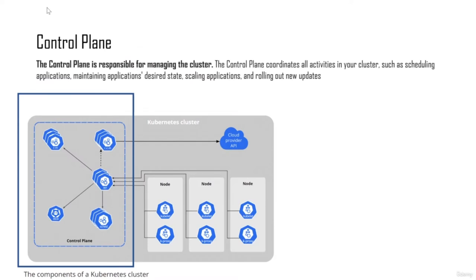Now let's talk about the control plane or the master node. The master node is responsible for managing your cluster. The control plane coordinates all the activities in your cluster, such as scheduling your application, maintaining your application's desired state, scaling applications, and rolling out new updates. These are some of the main features of your control plane.